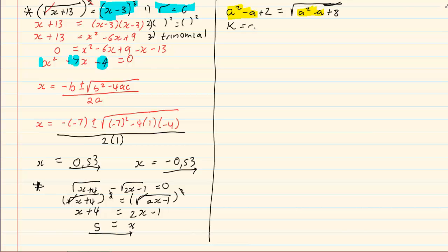So you make k is equal to a squared minus a. Then we use substitution so wherever a squared minus a is I'm taking it out and I'm going to put k. So k plus 2 is equal to the root of k plus 8. Now you will notice that I have a root sign. So I'm going to use the root sign method to solve for k.